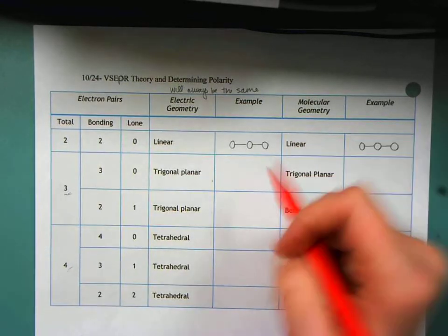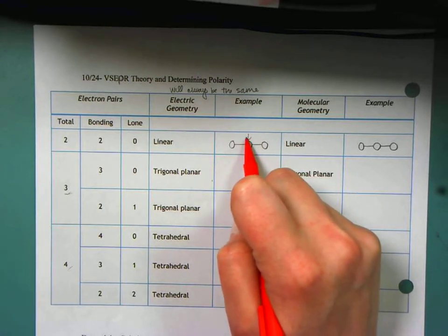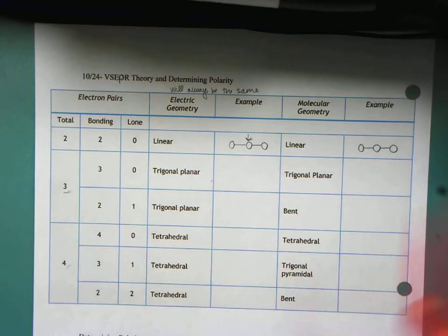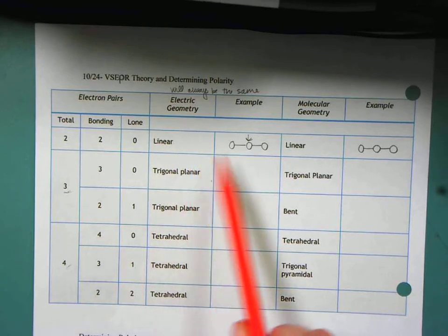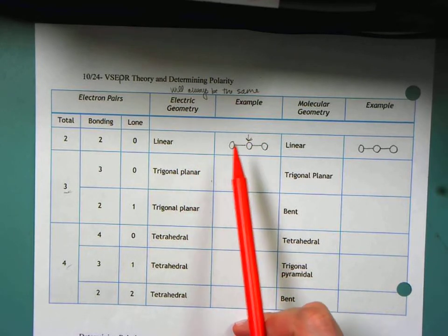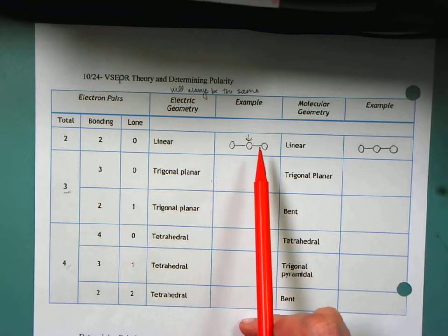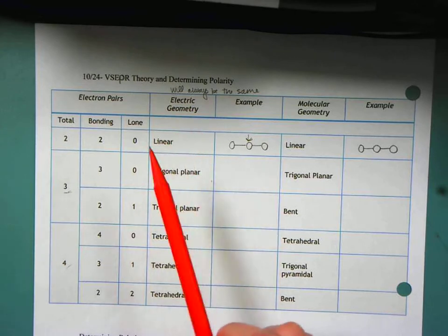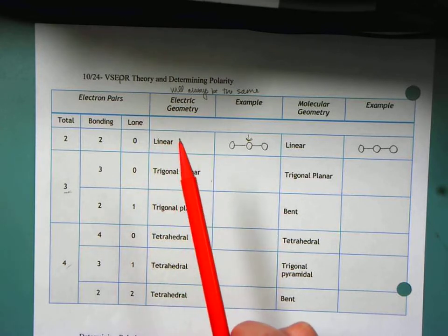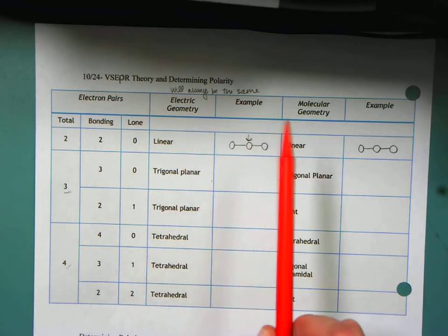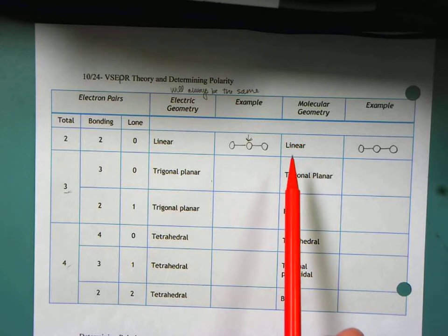And so we look at what we call the central atom to figure out how many bonds are being made. So with this very first example, I have my central atom that's connecting to two other atoms, which means that I have a linear electric geometry. And then my molecular geometry is also linear.